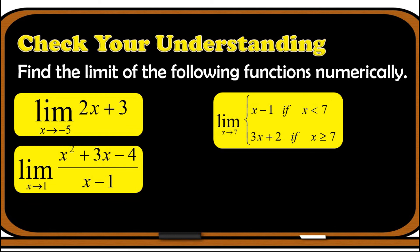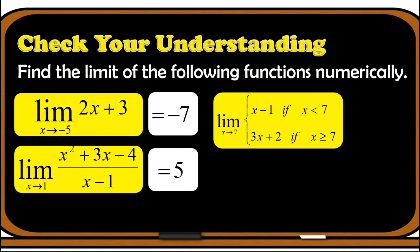After showing you how to find the limit of a function using numerical method, you need to check your own understanding. Find the limit of the following functions numerically. You may pause the video to answer these problems. Let us now check your work. The limit of 2x plus 3 as x approaches negative 5 is equal to negative 7. Second, the limit of (x squared plus 3x minus 4) over (x minus 1) as x approaches 1 is equal to 5. And for the last problem, the limit of the piecewise function — x minus 1 if x is less than 7, and 3x plus 2 if x is greater than or equal to 7 — as x approaches 7, does not exist. Did you get all of these answers correctly? If yes, great job!